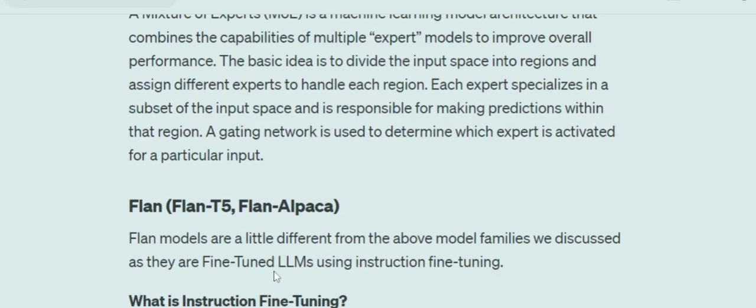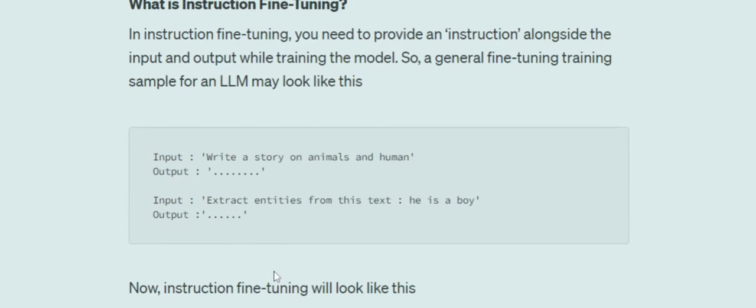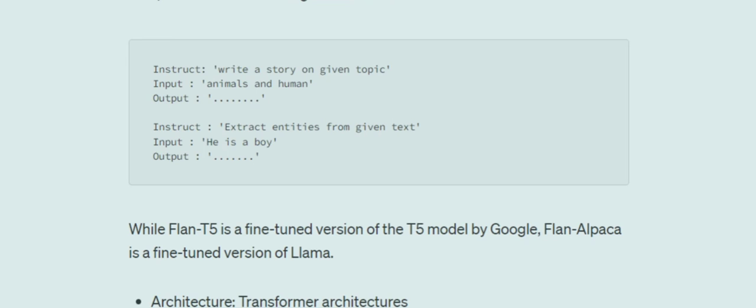FLAN-T5 is a fine-tuned version of the T5 model offered by Google, and FLAN-Alpaca is a fine-tuned version of LLaMA. It's not a separate family per se, but because they follow the same fine-tuning strategy, they are grouped together under the FLAN group.